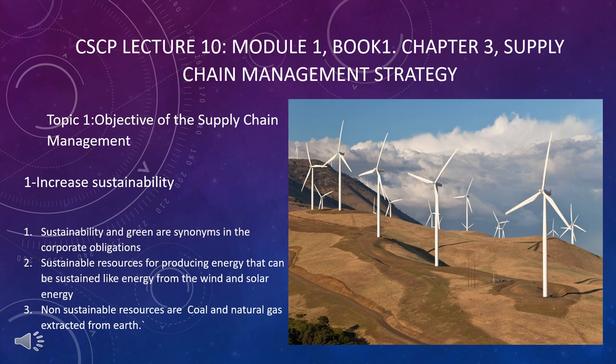Other energy resources such as coal and natural gas are not sustainable — one day they will finish. The concept here is to use sources of energy in the supply chain that are sustainable and green, with no harm to the environment. We need to care about our environment and shift to our next generation in a way that they can also enjoy good environmental conditions.